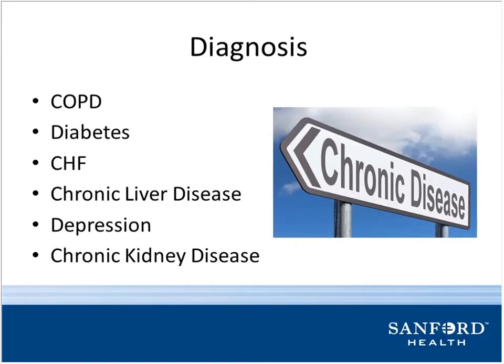We also pull in different diagnoses — the chronic disease diagnoses built into the current state of our algorithm. Does the patient have COPD, diabetes, CHF? Any of these chronic diseases will pull into the patient's score.